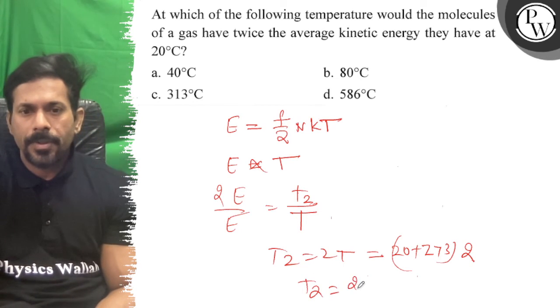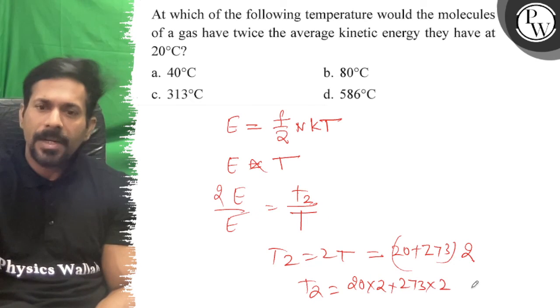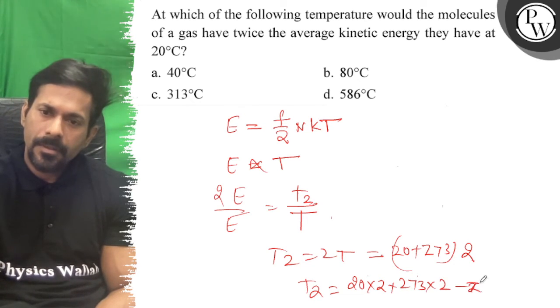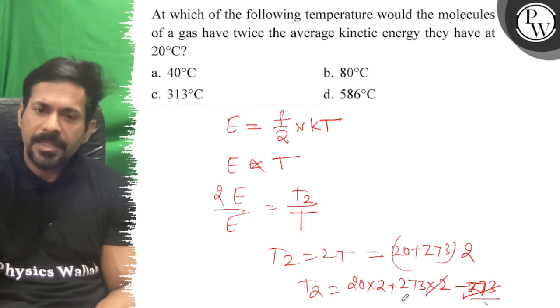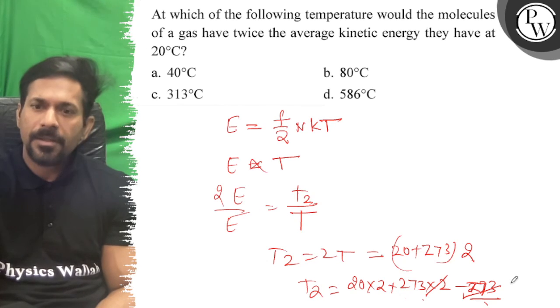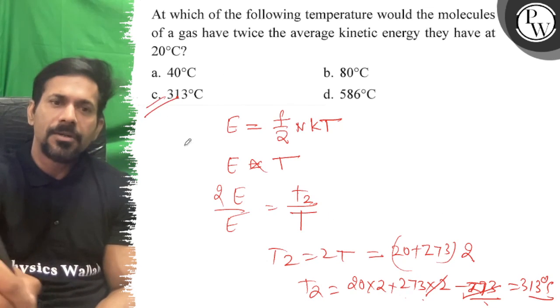20 times 2 plus 273 times 2 minus 273. That gives us 313 degrees Celsius. So the right answer to the question is C. All the best.